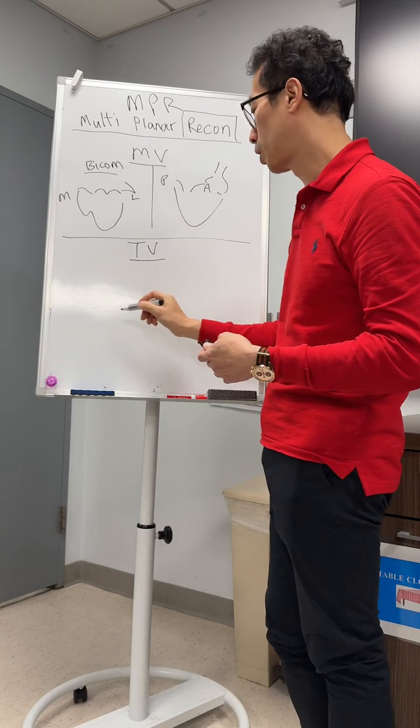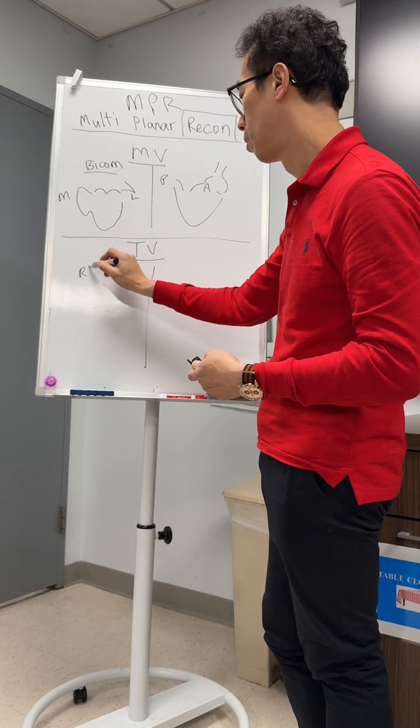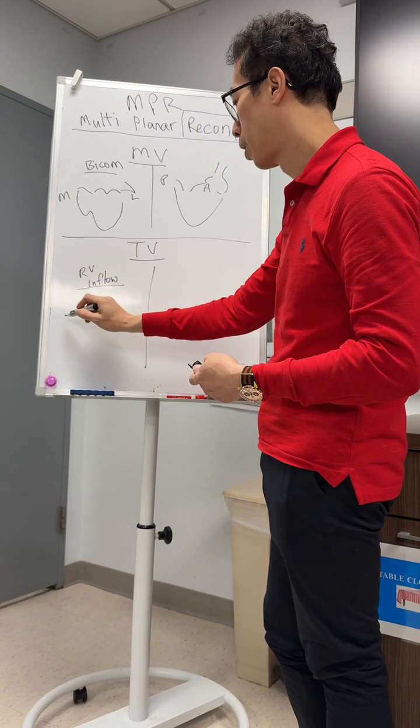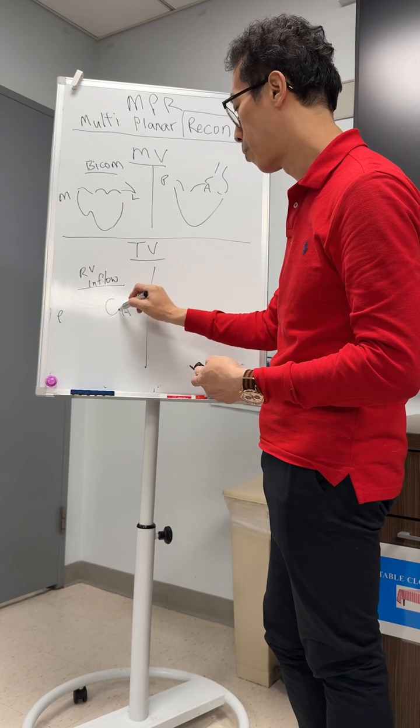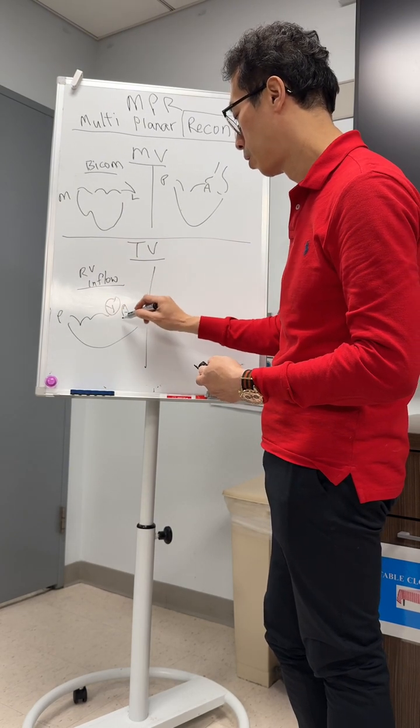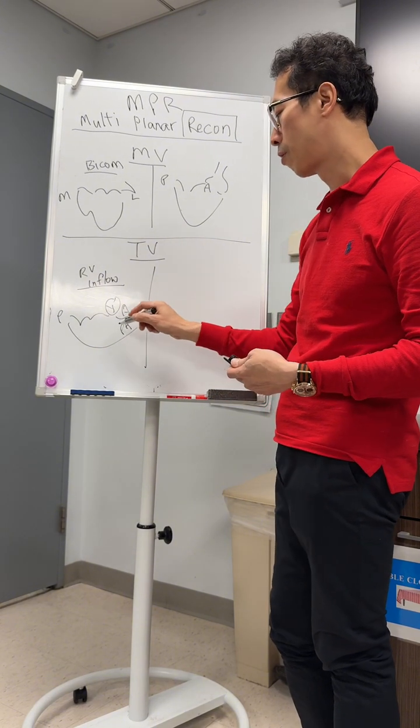In terms of tricuspid, just to review, this is the atrial view. So here will be, this is the anterior. Aortic valve, remember, is up there and here. And then this is the pulmonary artery, right? Or atrial teeth.